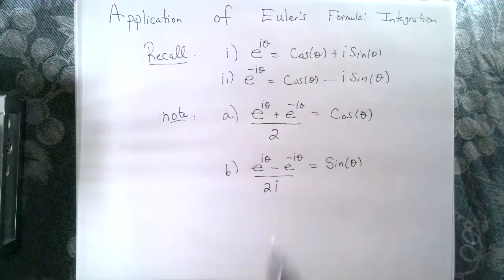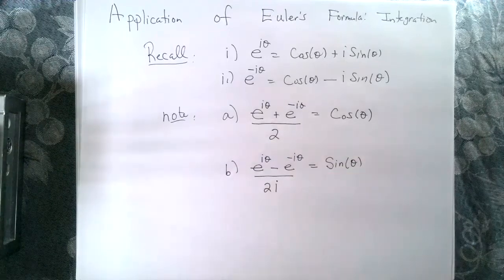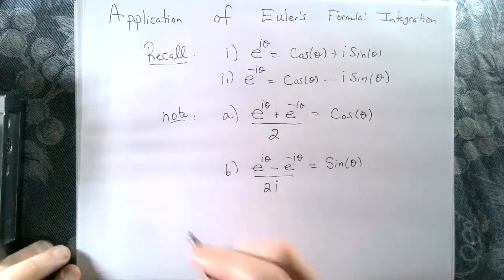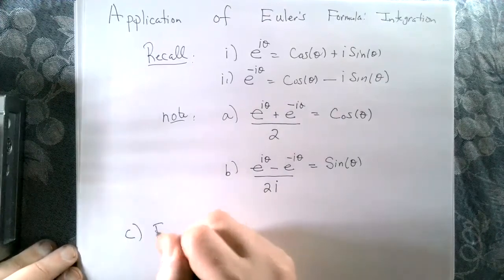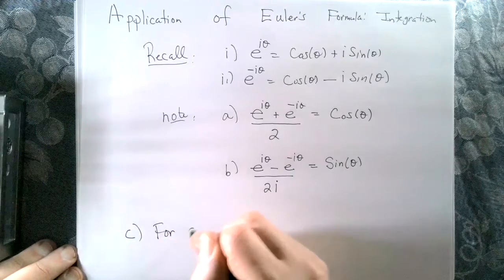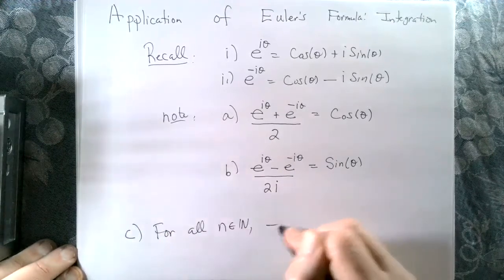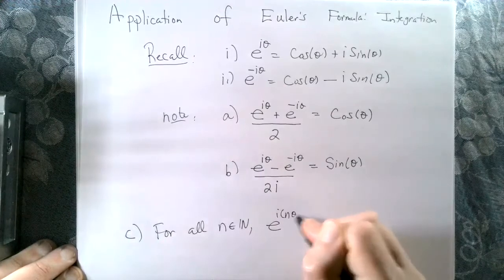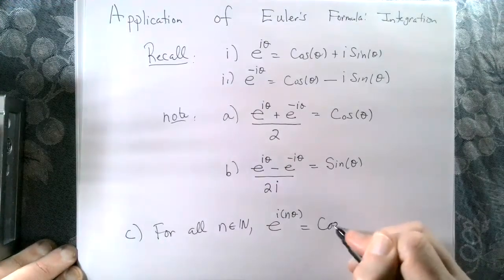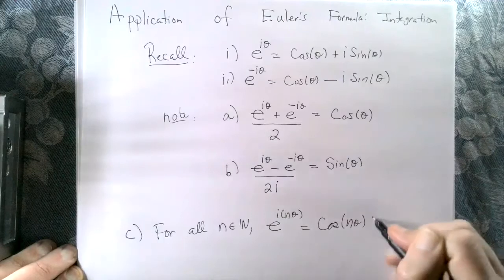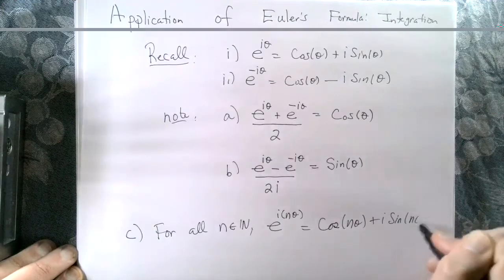Keep these in mind — they give us flexibility when we integrate. It's also nice to note what we just proved: for all natural numbers n, e to the i n theta equals cosine of n theta plus i sine of n theta.